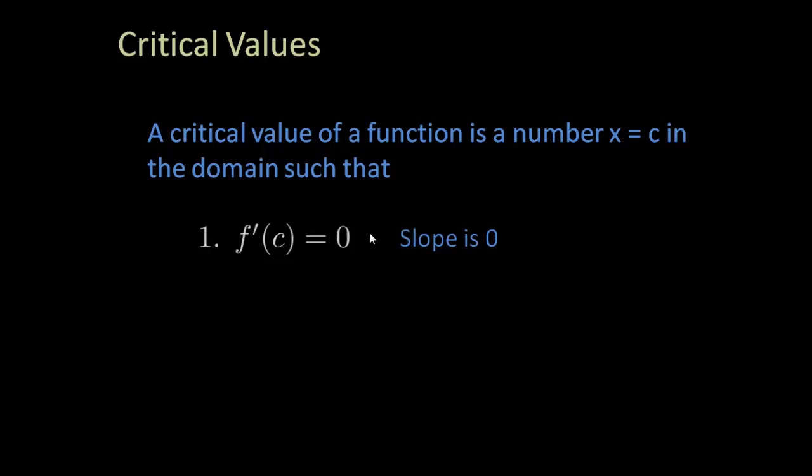What that means is that the slope is zero there where you have a critical value, or where the derivative does not exist. At these spots, usually they're corners or they're vertical tangent lines.